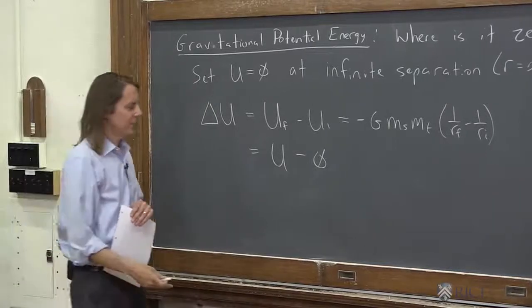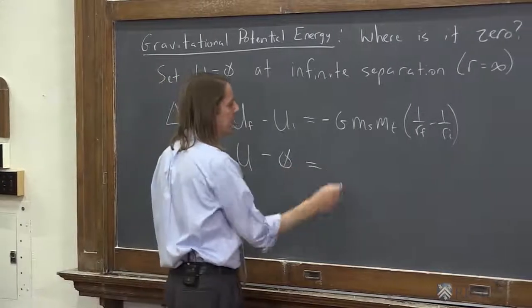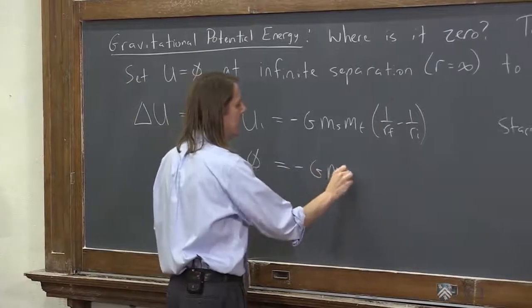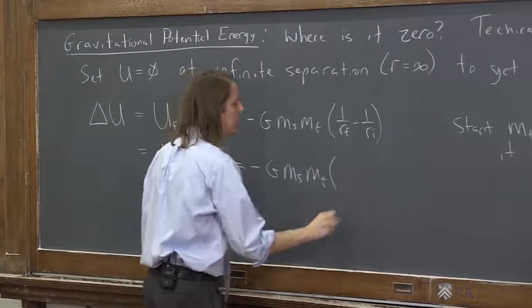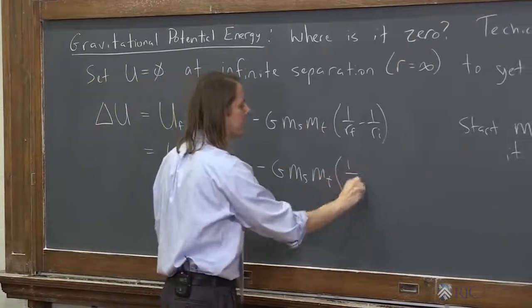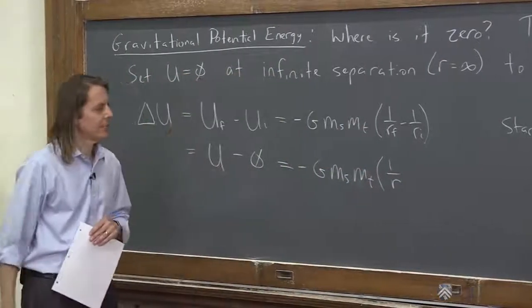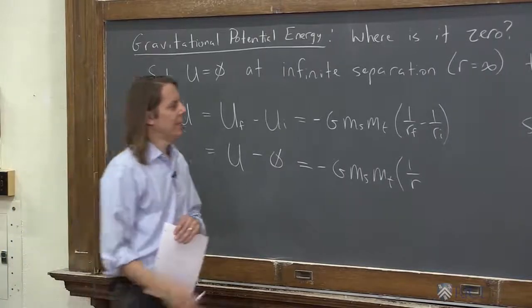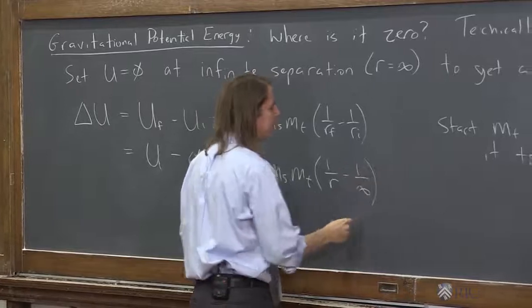So u minus an initial of zero is just u, the absolute energy. And then minus g, the two masses. The final r is just r. And it gets up to some potential energy r, or some position r. And the initial was infinity, minus one over infinity.